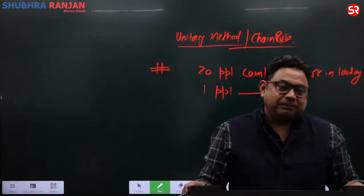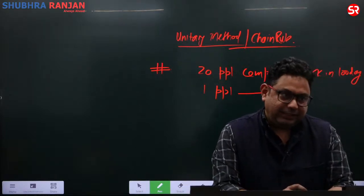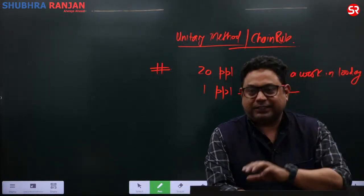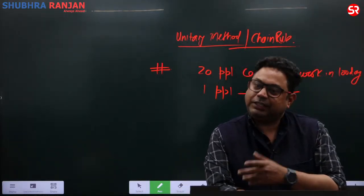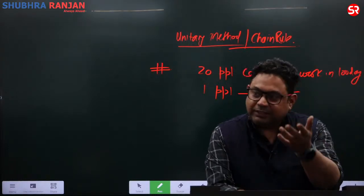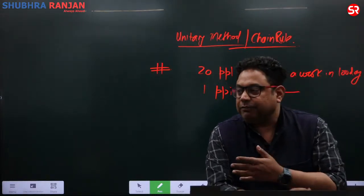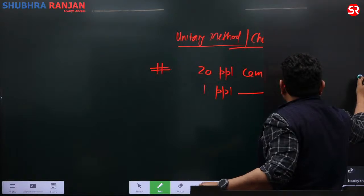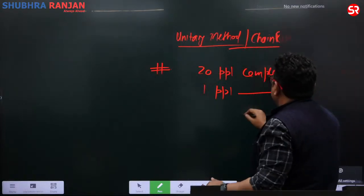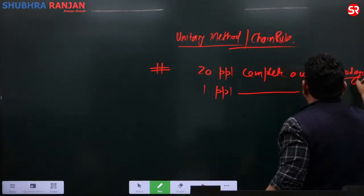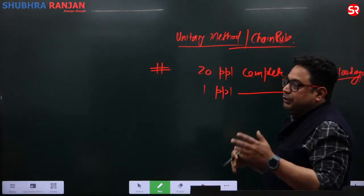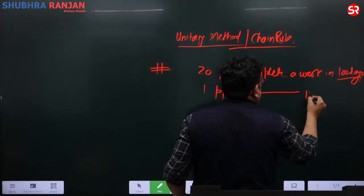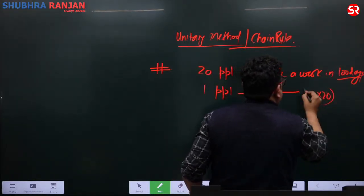Our basic instinct says divide, as the teacher taught in childhood, and we just agreed without thinking rationally. But if 20 people can finish a job in 100 days, obviously one person would take more days, so we multiply: 100 into 20 days.